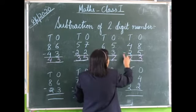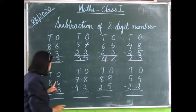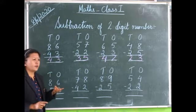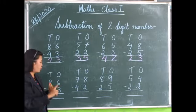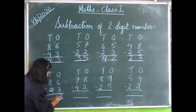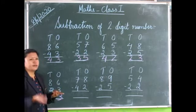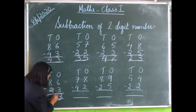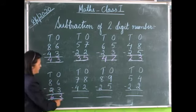Eight minus two. Eight on the head, two in our fingers. We count backwards: eight, seven, six. Therefore, 86 minus 23 is equal to 63.